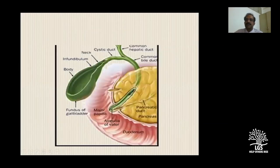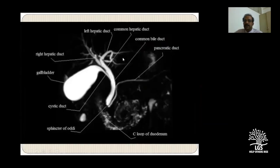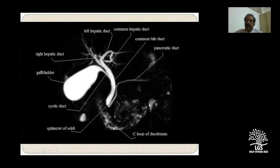This is a pictorial representation of how the biliary system looks. On the MRCP image - this is called an MIP image, maximum intensity projection - you have the gallbladder, the cystic duct draining into the common bile duct, the right and left hepatic ducts, and the first generation of biliary radicals. You see the pancreatic duct and the ampulla with the sphincter of Oddi. Any fluid-containing structure appears bright - fluid in the C-loop of the duodenum and in the stomach - which is why we restrict fluid intake before the scan.